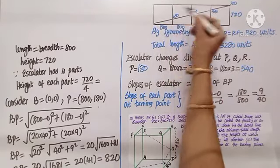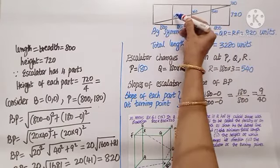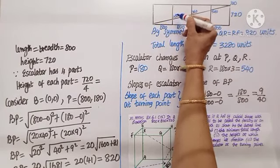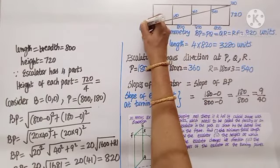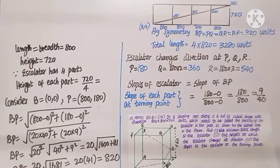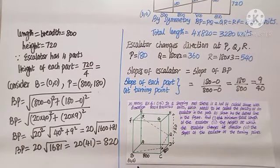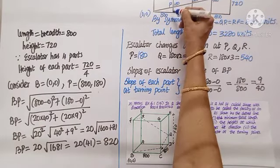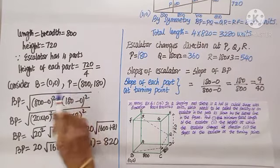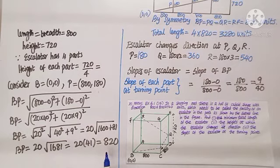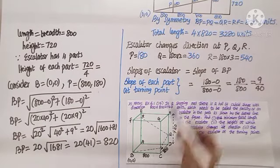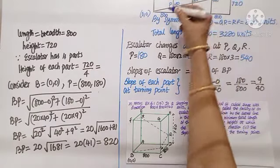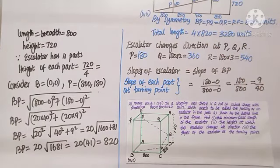Calculate the length of one segment using the distance formula with points B at (0, 0) and P at (800, 180): distance equals square root of 800 squared plus 180 squared, giving approximately 820. Since there are four such lengths, total length equals 4 times 820 equals 3280. The turning points are at heights 180, 360, and 540.